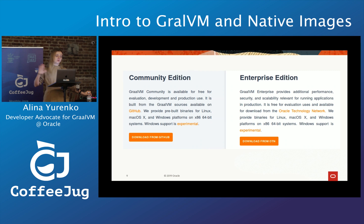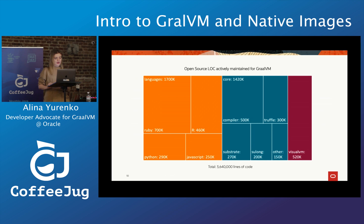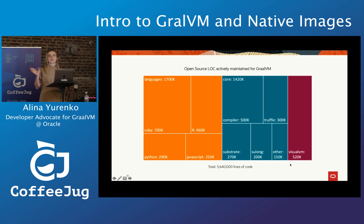It comes in two editions. Community Edition, which is open source, you can use it fully free of any license. And we also have Enterprise Edition, which requires a commercial license to use in production environments. This is an overview of all our open source repositories — quite a bit of code. If you're interested in any component like the compiler, language implementation, or tools like VisualVM, you can find it on GitHub.